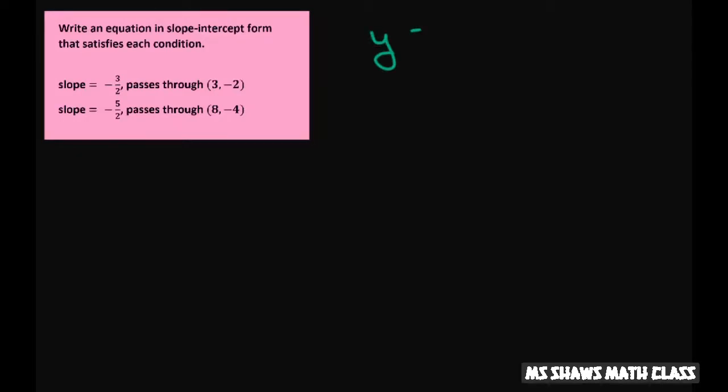So our slope-intercept form is y equals mx plus b. So the first step, fill in your m, your slope. So we write y equals negative 3 halves x plus b.